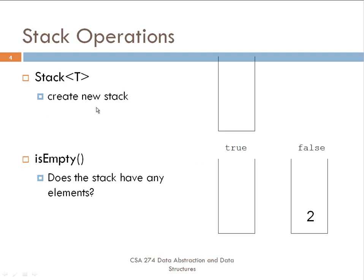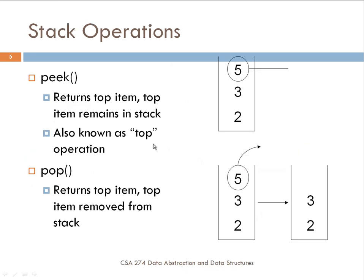Let's look at these graphically. Creating a new stack executes and creates an empty stack. The second operation checks whether the stack is empty — if the stack is empty, is_empty returns true; if there's something on the stack, it returns false.